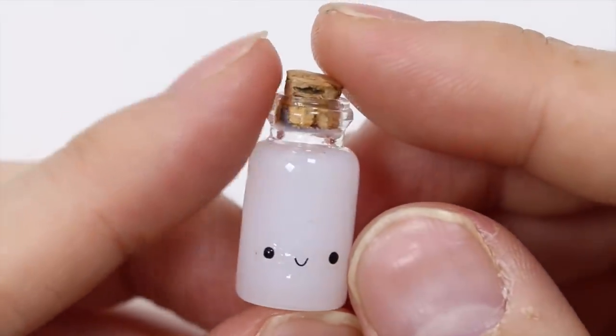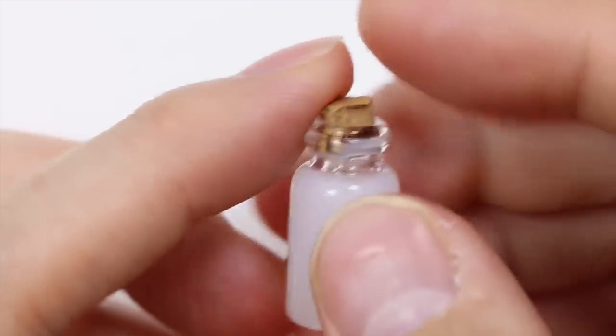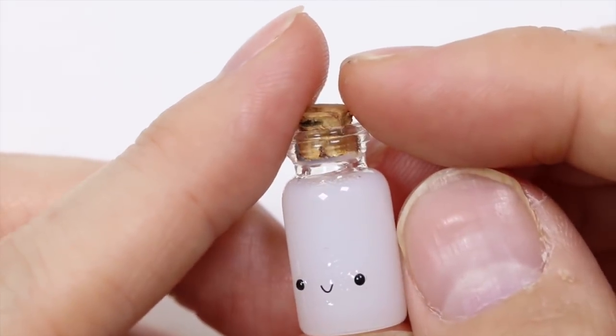And here's my bottle of milk. I wanted to add a label but at the same time I didn't want to cover up the white resin, so I just kept it like this.